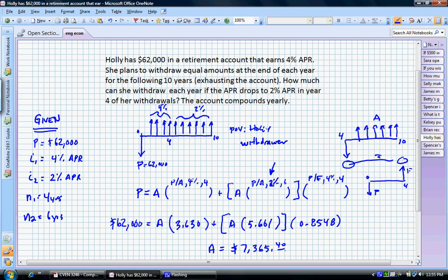If we think about that, it makes sense. That means Holly can withdraw $7,365.40 every year for the next ten years, and then she'll exhaust her account. So we're in the ballpark. We know that's right.